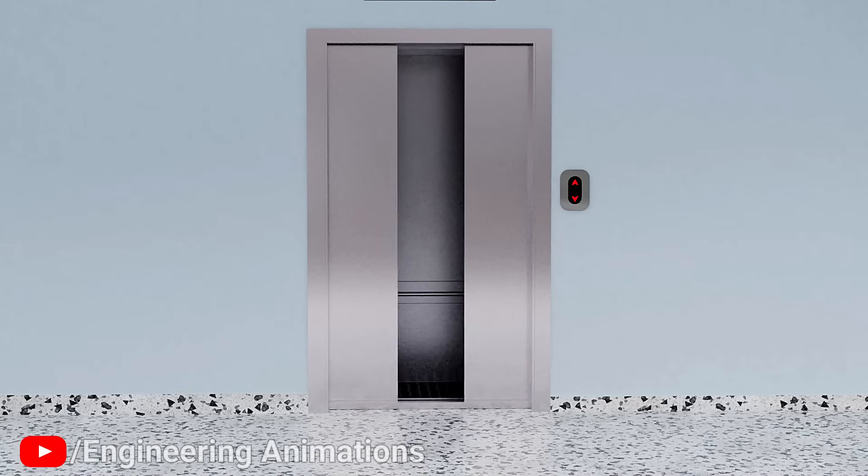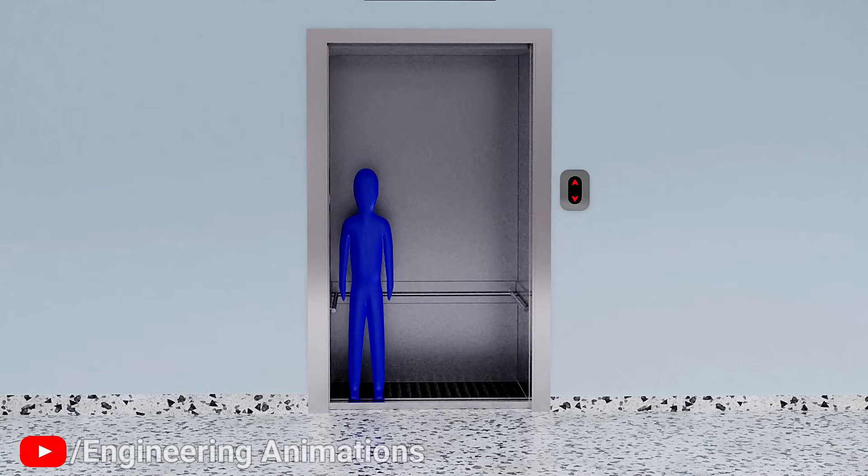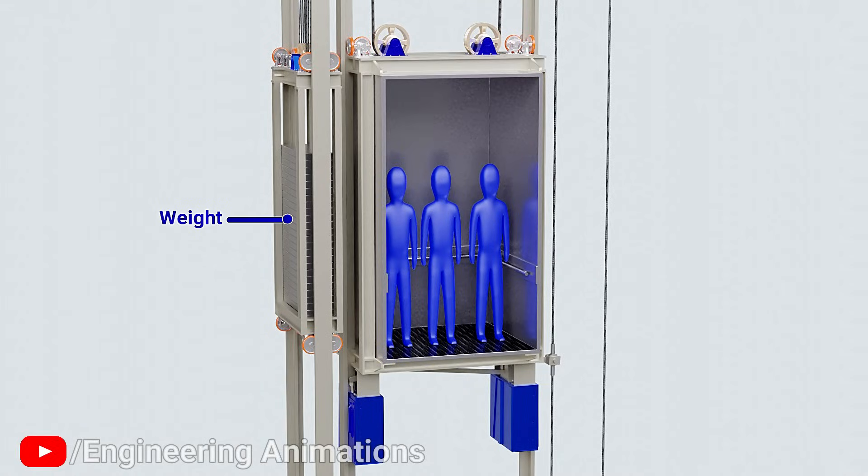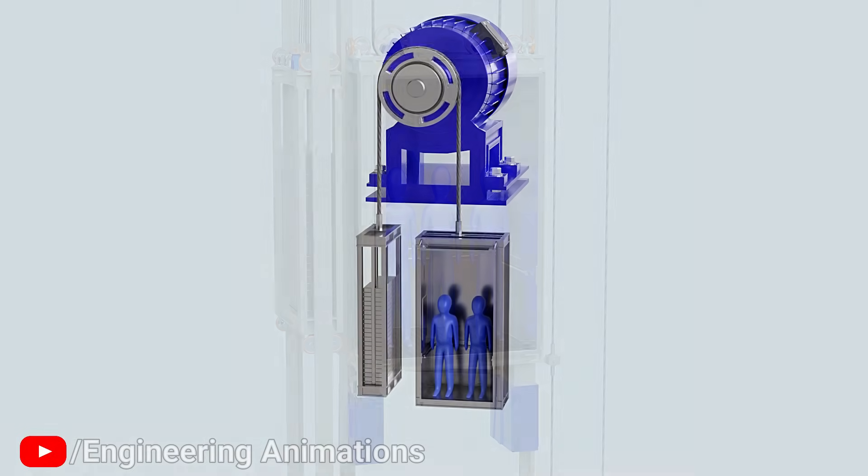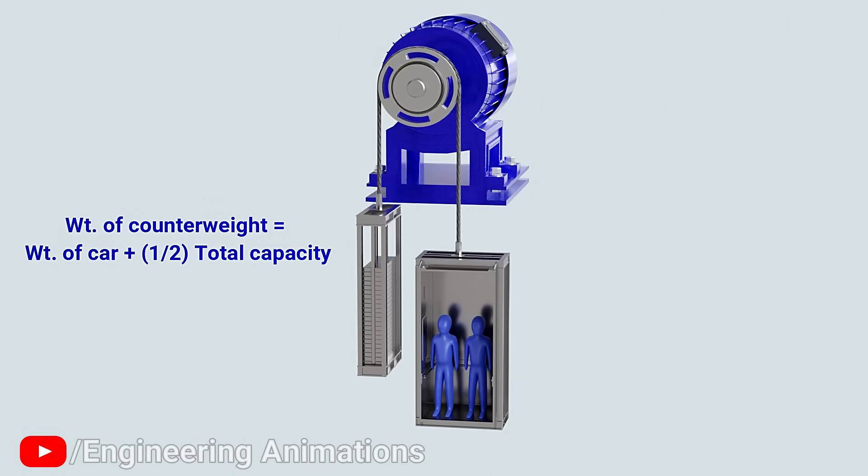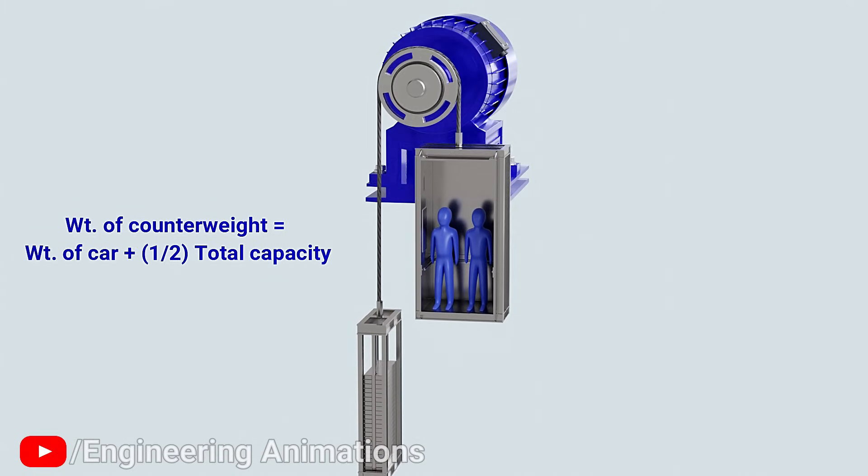However, in an actual elevator, the load on the car changes with the number of passengers, but the weight of the counterweight remains constant, which creates certain imbalance in the system. To minimize this imbalance, weight of counterbalance is determined by using a formula, which is explained at the end of this video.